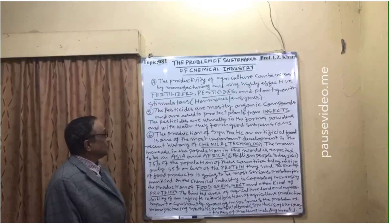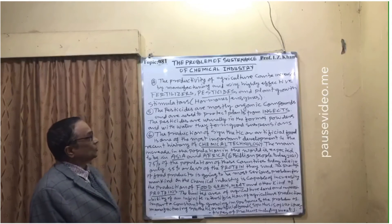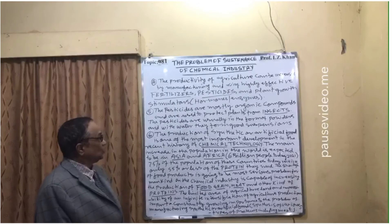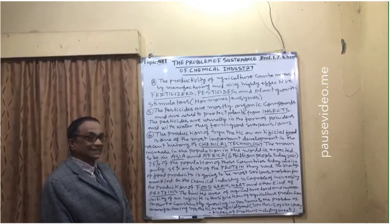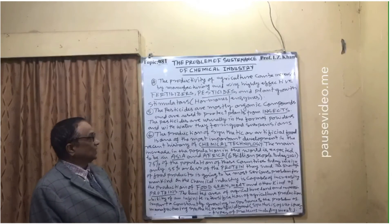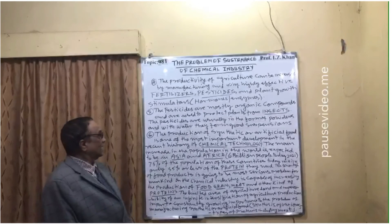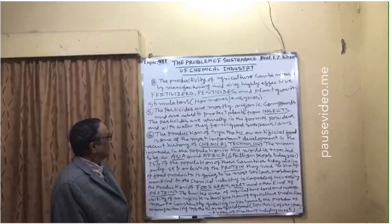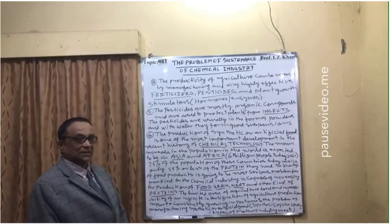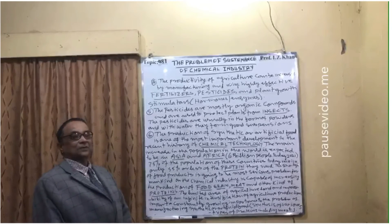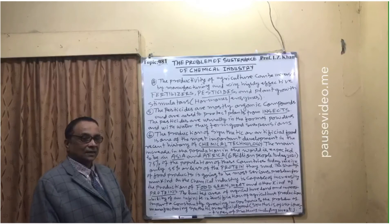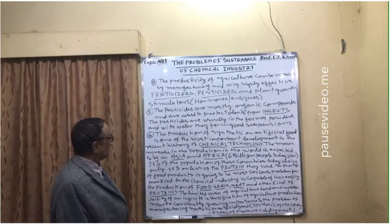Number five: pesticides are mostly organic compounds and are used to protect plants from insects. Pesticides are usually in the form of powders, and with water they form good suspensions which are used in the agriculture field.